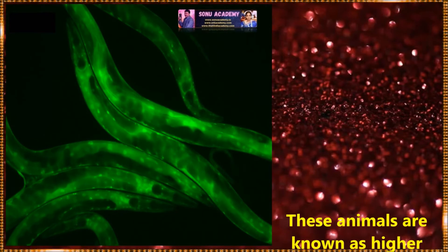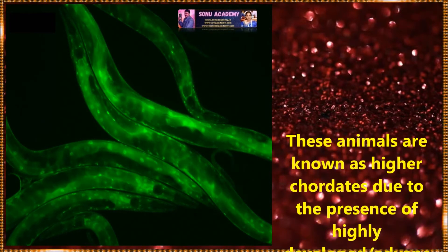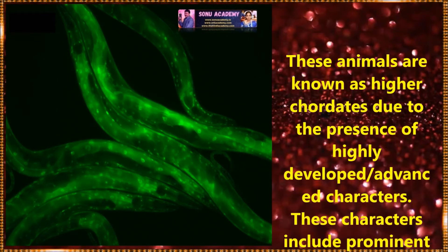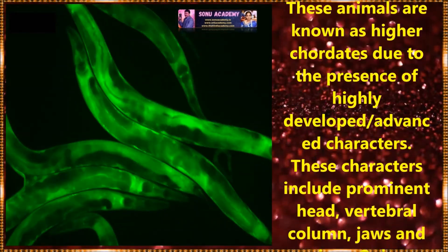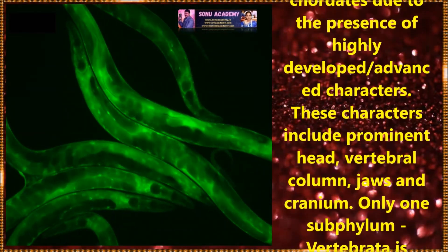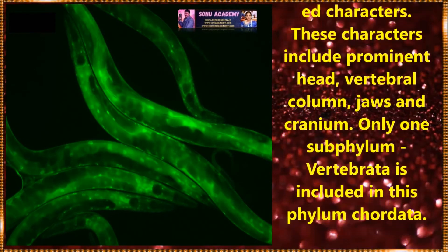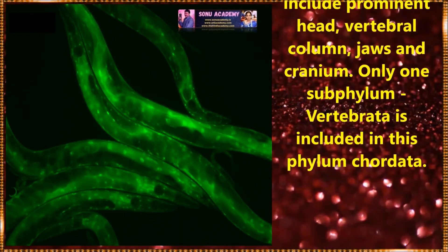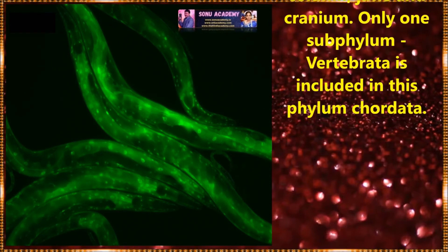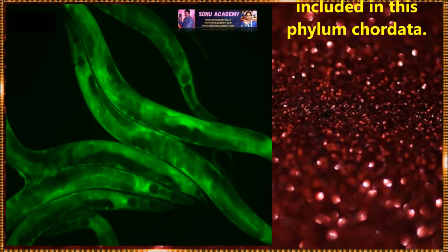Now let us discuss about Craniata or Euchordata. These animals are known as higher chordates due to the presence of highly developed and advanced characters. These characters include a permanent head, vertebral column, jaws, and cranium. Only one subphylum, Vertebrata, is included in this group.